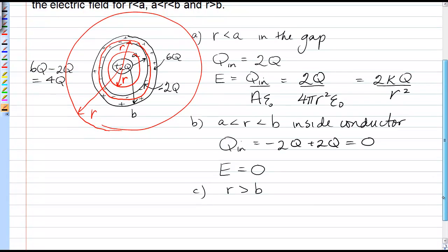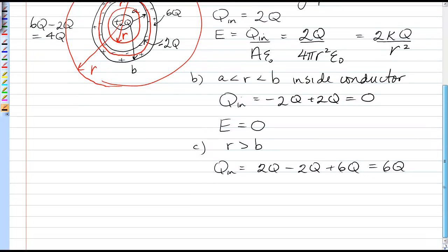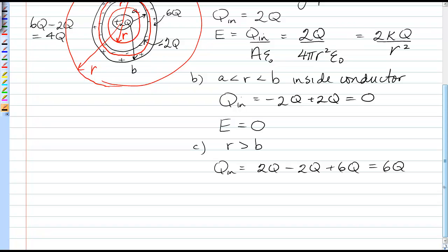So q_in would be the point charge in the center, plus 2Q, negative 2 from the inner surface of the conductor, plus 6 from the outer surface of the conductor, which equals a total of 6Q. Or we could have just added the 2 and the 4, not really being concerned about where the charge resides.